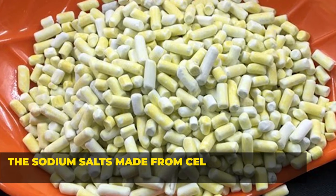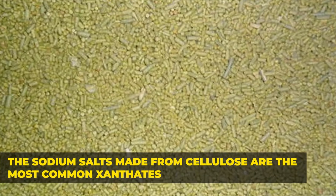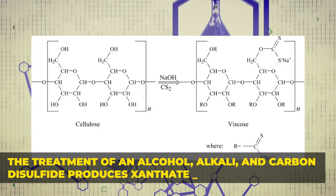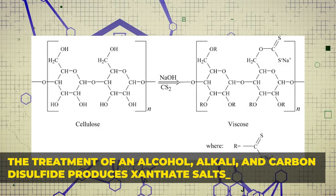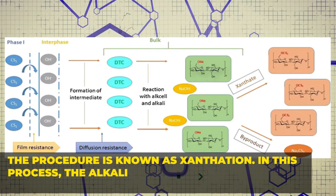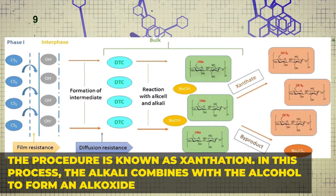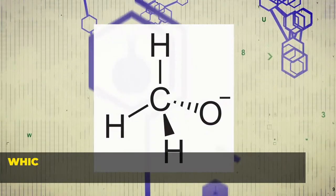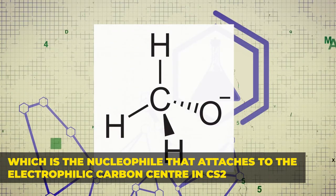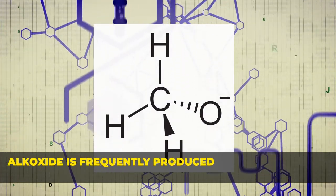The sodium salts made from cellulose are the most common xanthates. The treatment of an alcohol, alkali, and carbon disulfide produces xanthate salts. The procedure is known as xanthation. In this process, the alkali combines with the alcohol to form an alkoxide, which is the nucleophile that attaches to the electrophilic carbon center in CS2.